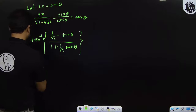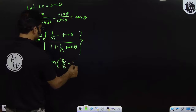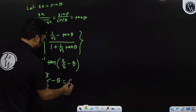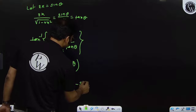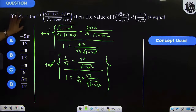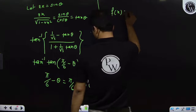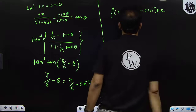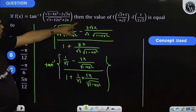This becomes tan inverse of tan(π/6 - θ), which equals π/6 - θ. And θ = sin⁻¹(2x). So the required expression for f(x) is: f(x) = π/6 - sin⁻¹(2x).